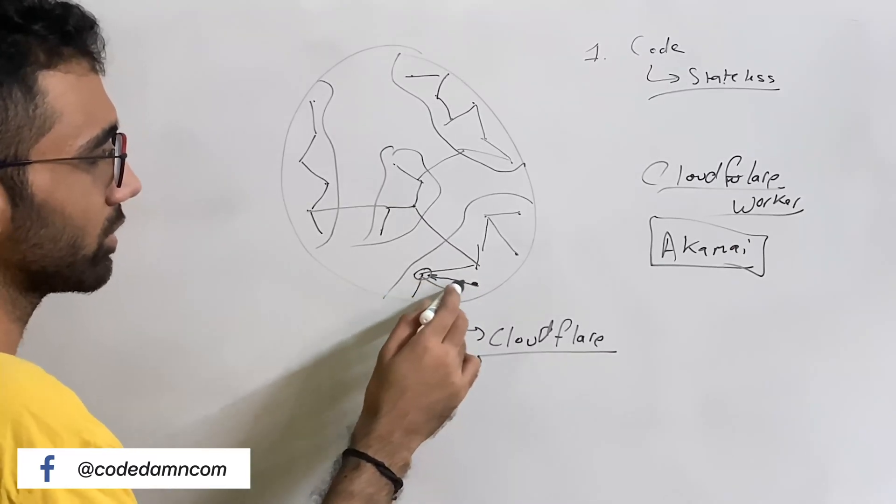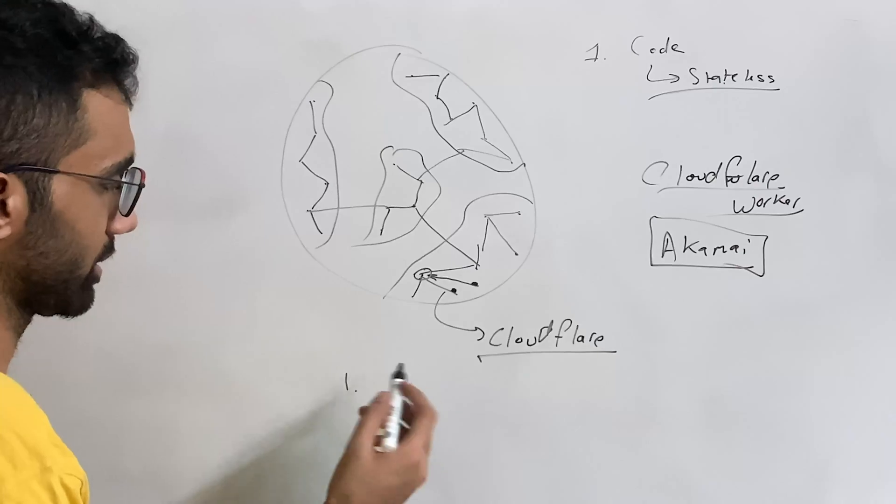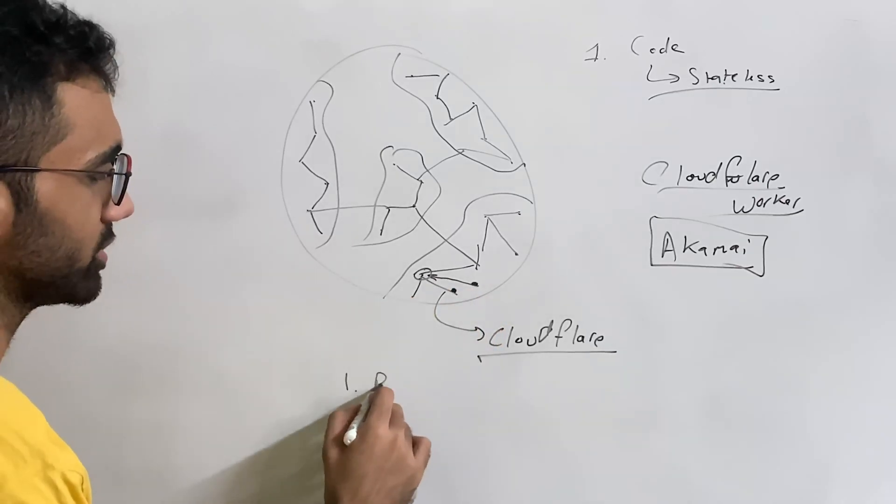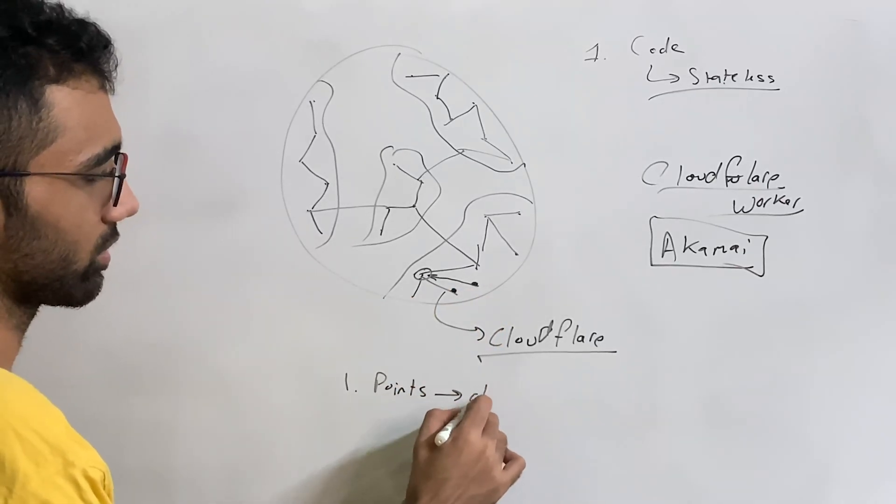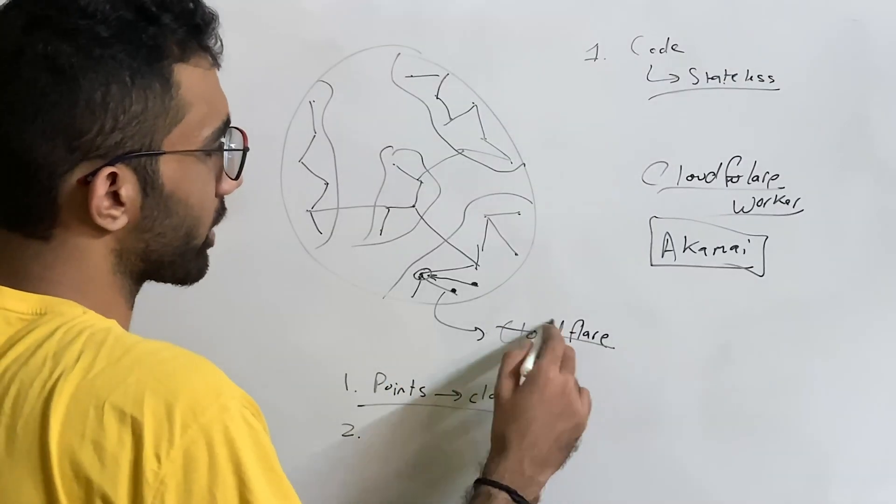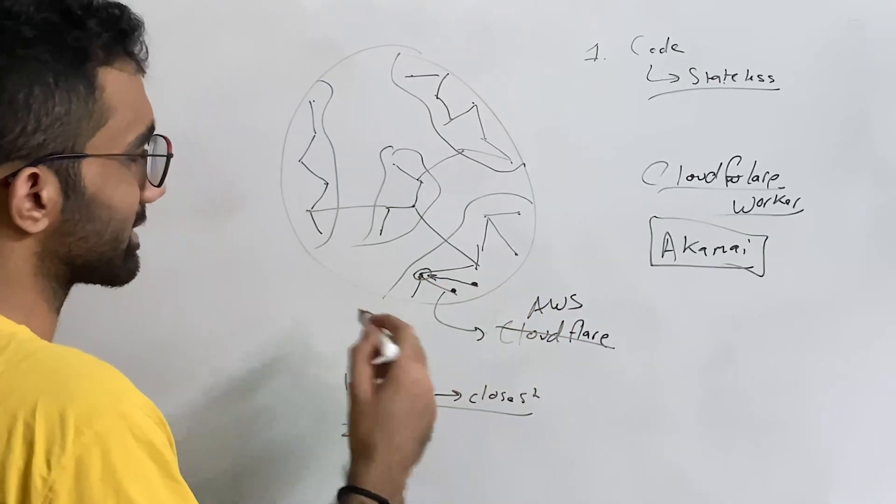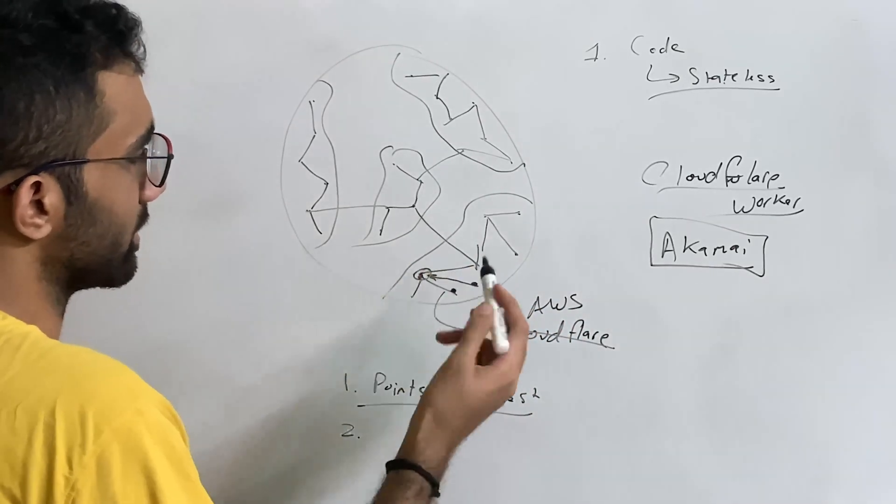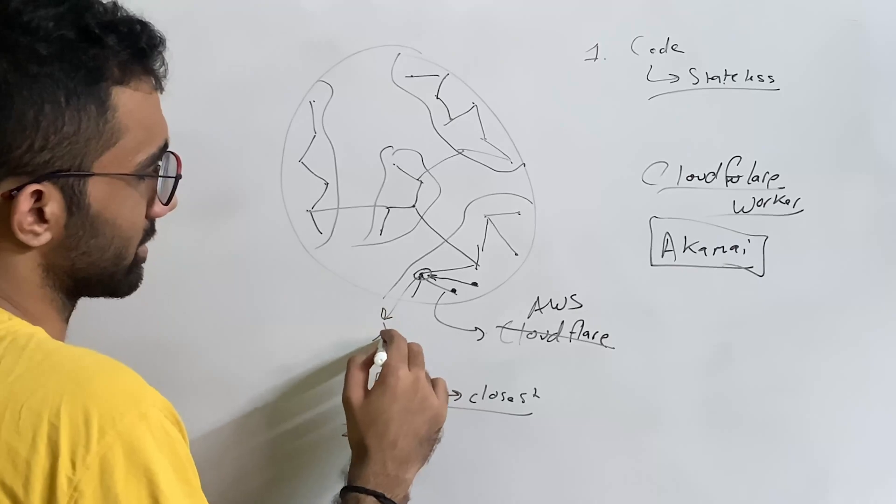Let's say if you're requesting a resource on a worker, it will point you to the closest worker which you have to execute the code and return it. That's the first advantage: it points you to the closest worker depending on your location in the world.